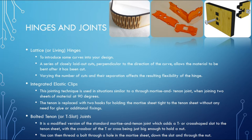If you are looking to introduce some curves into your design, you can use a laser cutting machine more effectively than traditional cutting methods. A series of closely laid-out cuts perpendicular to the direction of the curve allows the material to be bent after it has been cut. Varying the number of cuts and their separation affects the resulting flexibility of the hinge. Similarly, other designs like integrated elastic clips or bolted tenon joints can be carried out efficiently with laser cutting machines.